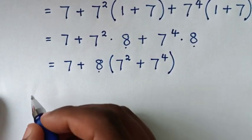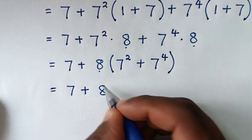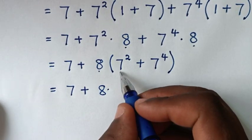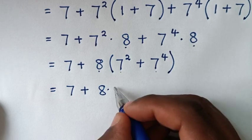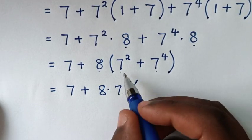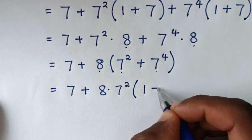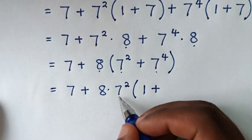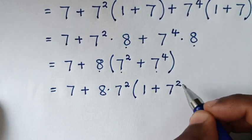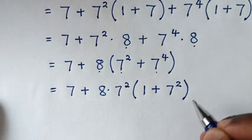Then in the next step it will be equal to 7 plus 8 times 7 square plus 7 power 4 — 7 square is common. So we take 7 square out of bracket: 7 square divided by 7 square is 1, plus 7 power 4 divided by 7 square is 7 square, because the power of 4 minus the power of 2 is power of 2.